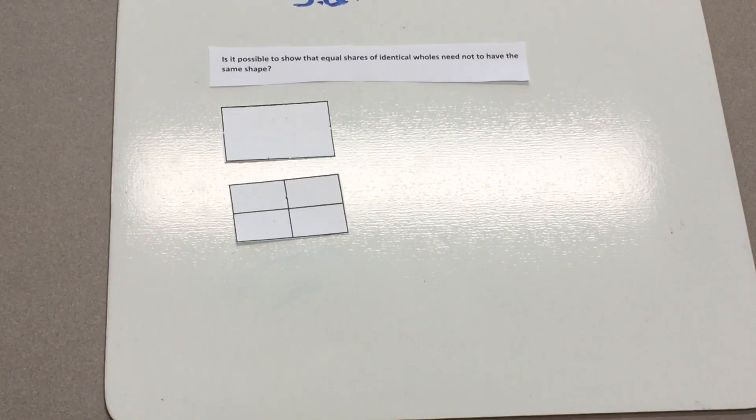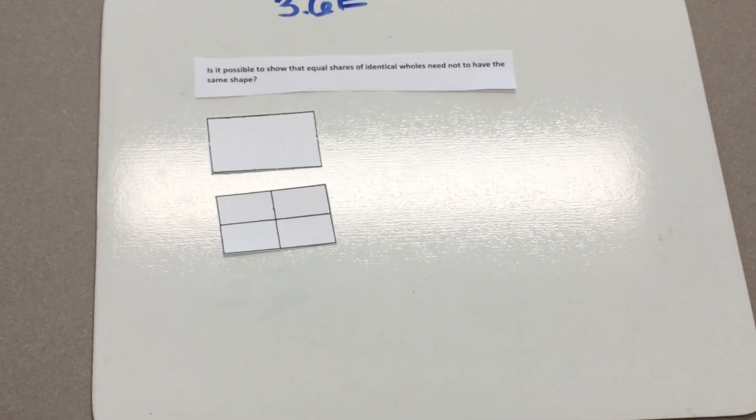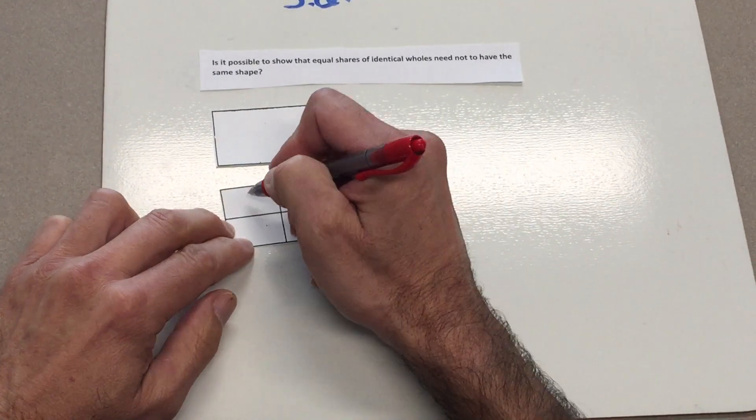I will now label each fractional piece with its unit fraction. The fractional name of each part is one fourth.